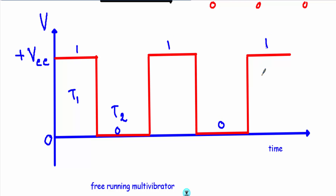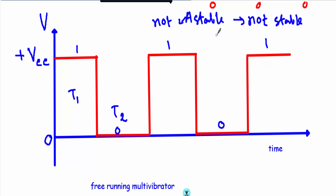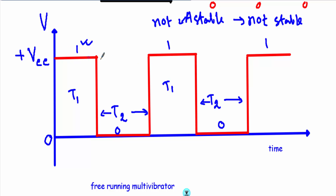The word 'a-stable' — 'A' means 'not'. That means the output of this multivibrator will not be stable. An astable multivibrator has no stable states. For a brief interval of time our output will be at one, after that it will come to zero and remain at zero for time interval T2. After that, there will be an automatic transition from zero to one, remaining at one for T1, then automatic transition back to one to zero. This process occurs continuously as the output is not stable at either one or zero.